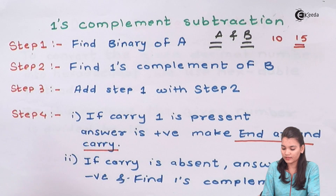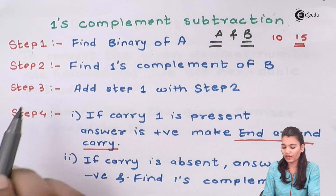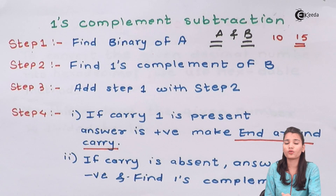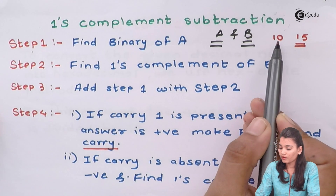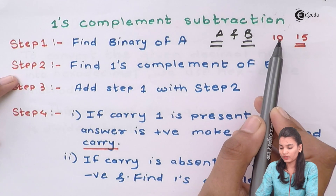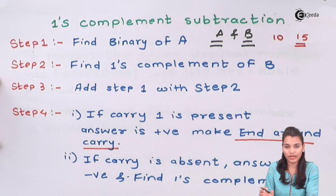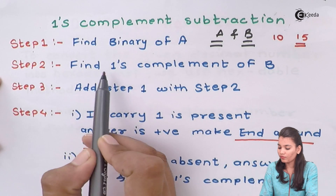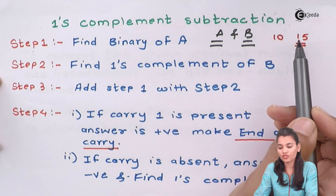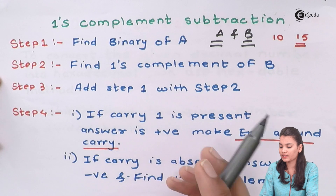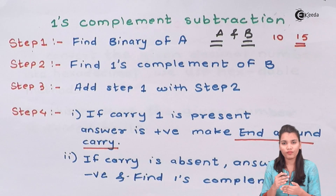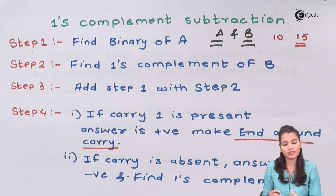In step 3, we have to add the results of step 1 and step 2. In step 1 we got the binary of A, and in step 2 we got the one's complement of B, which is the one's complement of 15. So in step 3, you will add the binary of A and the one's complement of 15.